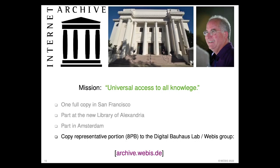The main copy lives in San Francisco in data centers there. There is a part at the new Library of Alexandria and a part in Amsterdam. As we learned during our negotiations for our data license, Brewster Kahle has a nice little joke: 'We now have one copy in an earthquake zone, one copy in a potential crisis zone, and one copy in a flood zone — the data is safe.' The Library of Alexandria in particular is best known for burning down.